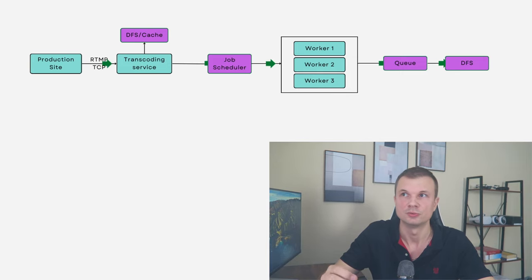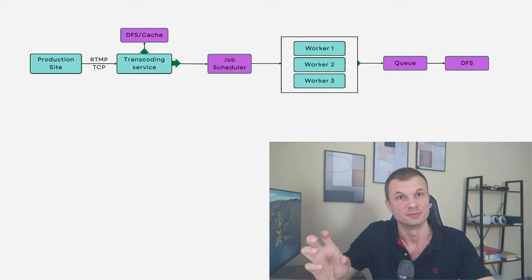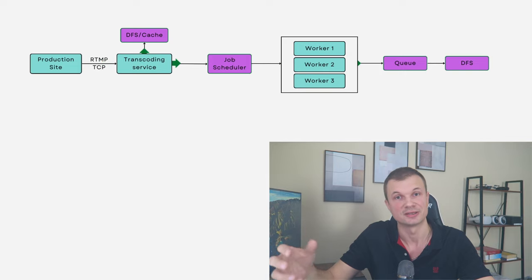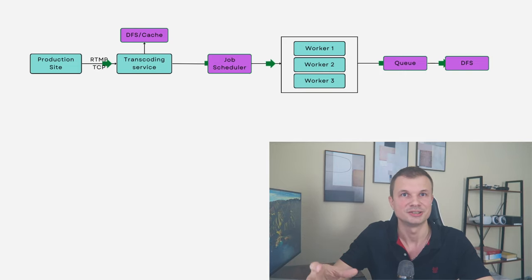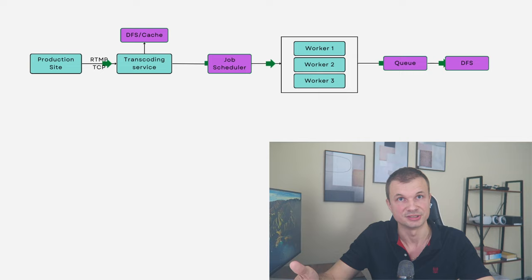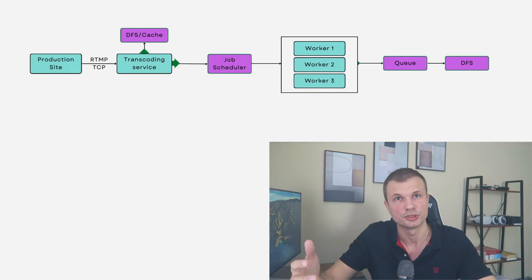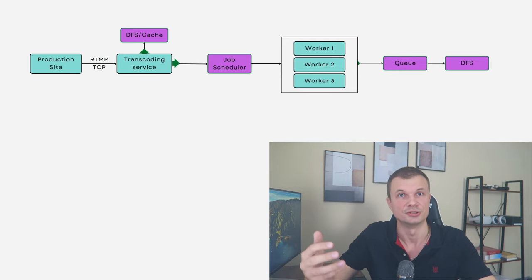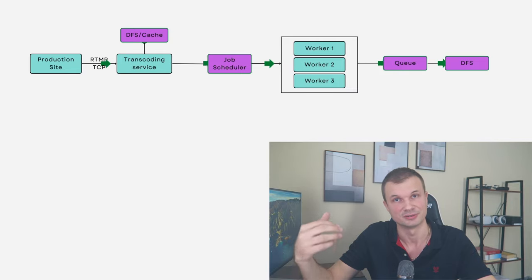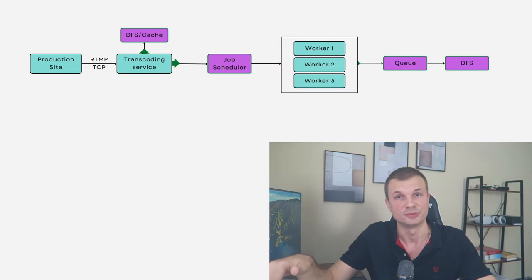Usually the production site sends one-second fragments through the TCP protocol to our data centers. As the video gets received at the transcoding service, we first store it in our distributed file system and cache it — this is the original storage. We keep the original fragments in case the transcoding server fails so it can recover that fragment and process it again.